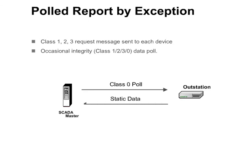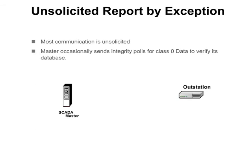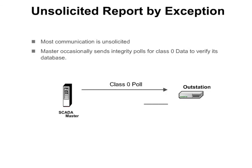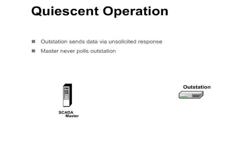With unsolicited report by exception, the outstation sends unsolicited responses containing changes or events. This allows the master station to be updated on events without the need to pull. However, it requires some type of collision avoidance mechanism if multiple outstations are sharing the same media. In addition to receiving unsolicited responses, the master station occasionally sends integrity — class 1, 2, 3, 0 — pulls to verify that its database is up-to-date. With quiescent operation, the outstation only reports data via unsolicited responses and the master never pulls the outstation. This method is most commonly used in point-to-point networks — for example, in dial-up applications in which the outstation dials into the master to deliver its unsolicited responses.